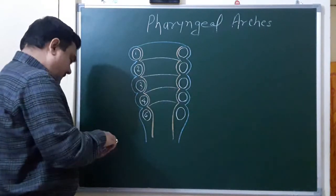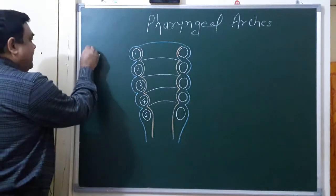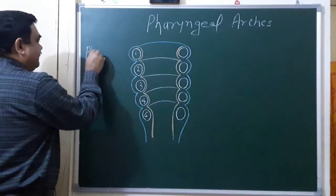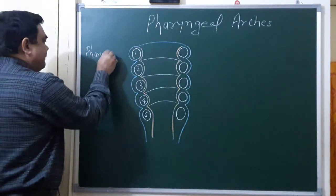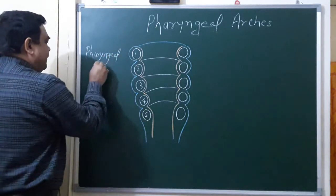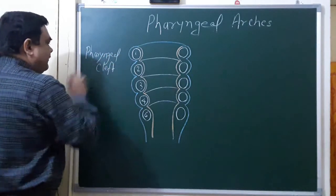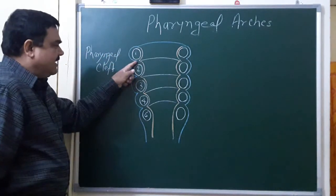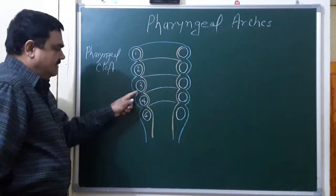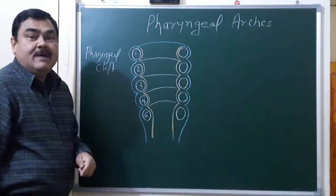These grooves are known as pharyngeal cleft. This is first pharyngeal cleft, this is second, this is third, this is fourth pharyngeal cleft.